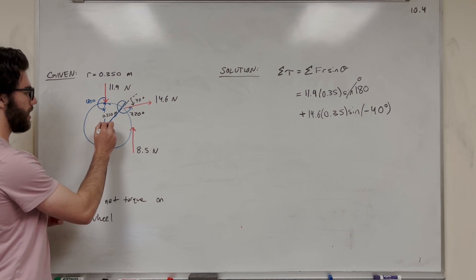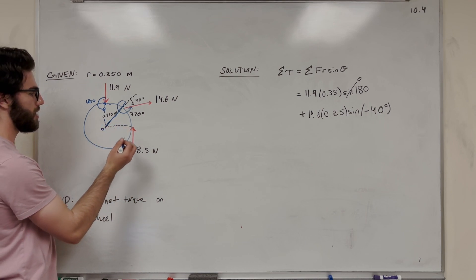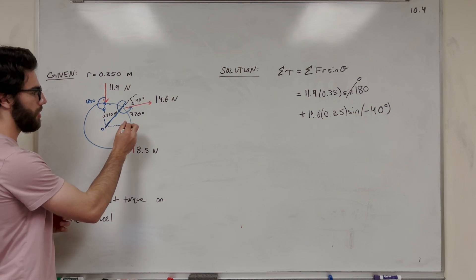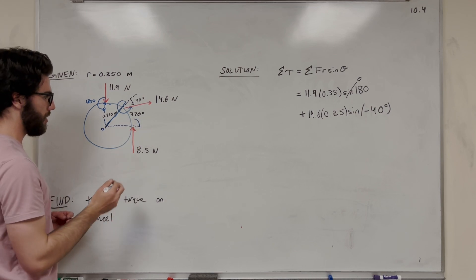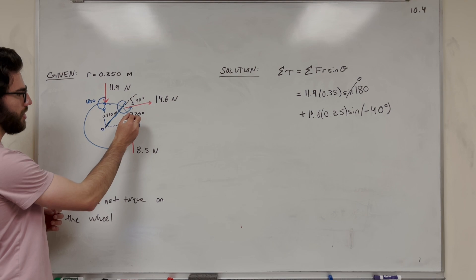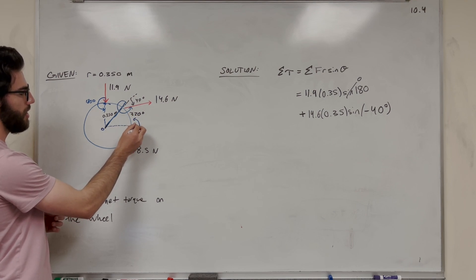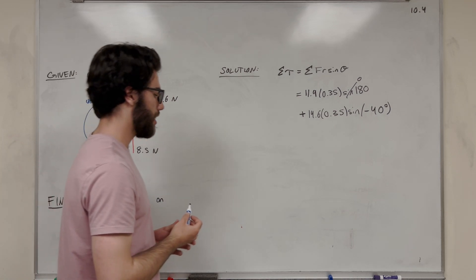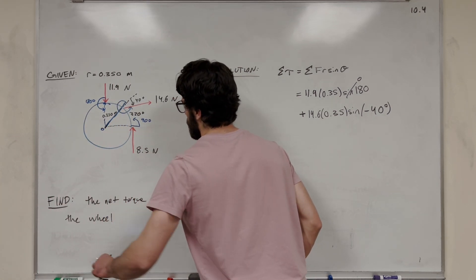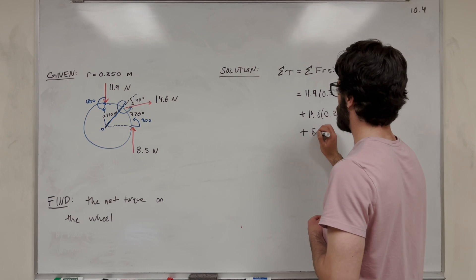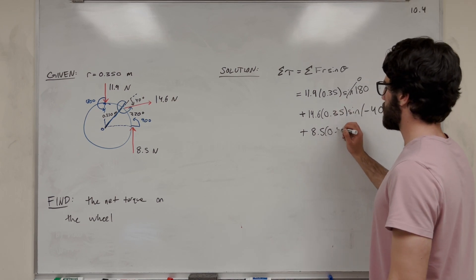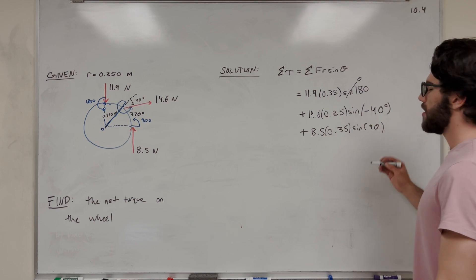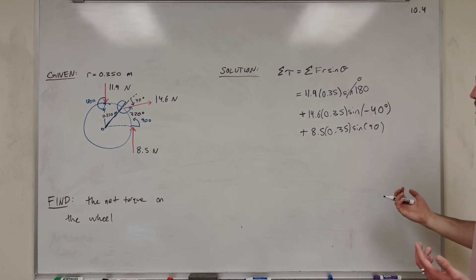So let's go on to our final one here. This one is going out this way, so it has the same radius. The force — we have its tip pointing here — what we really want to do is find where it's pointing to. So this vector is pointing upward. From the radius extended to there, it's going to be 90 degrees. So 90 degrees is what we're going to use for the last one. So we have 8.5 times the radius 0.35 times sine of 90. Sine of 90 is just equal to 1, so we don't have to worry about that.